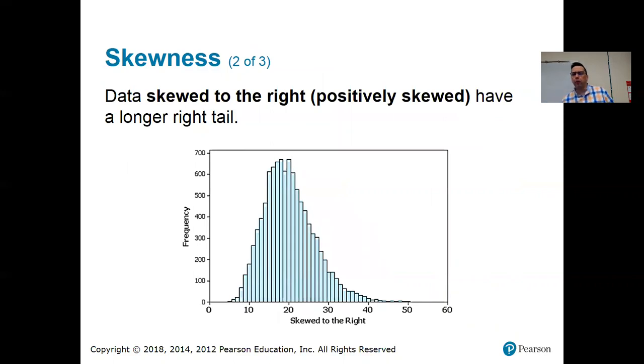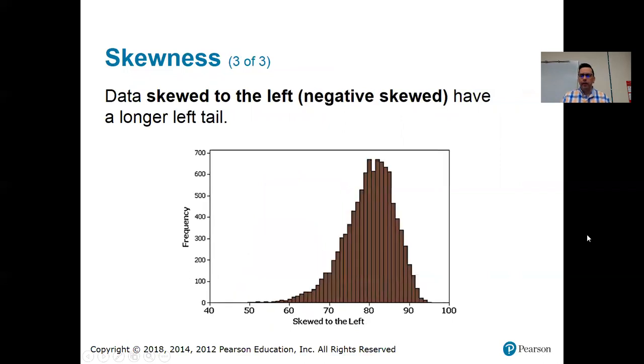And then, skewness. Skewed means not symmetric, extends more to one side than the other. Another term for skewed to the right is positively skewed. So again, the direction that it's been stretched, the direction of the tail, they call it. So if it has a longer right tail, that means it's skewed to the right. And if it has a longer left tail, that means it's skewed to the left.